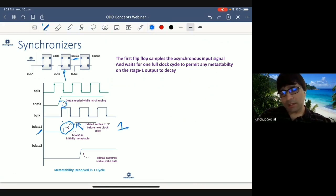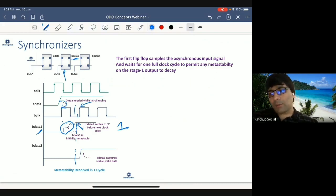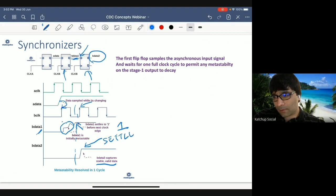It settled to value 1. It can settle to any value, 0 or 1. In this case, it settled to value 1. And when it settled, that was before the clock edge. So B data settled before the clock edge. Now, when this flop captures data, it is capturing a settled value. So B data 2, the d input of B data 2, when it is capturing a value, it is capturing a settled value.